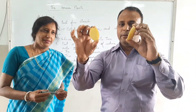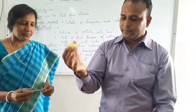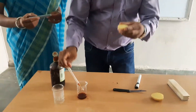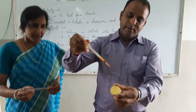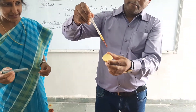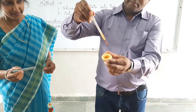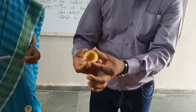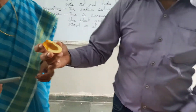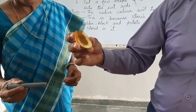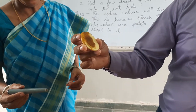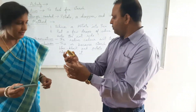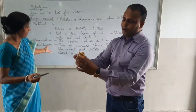Cut up a potato into slices. Take it — you can see the yellow color of the potato. Now put drops of iodine solution onto the cut potato using the dropper. After some time, this potato has changed color to blue and black — dark blue and black.